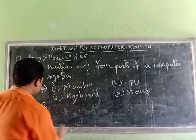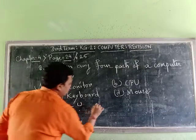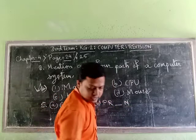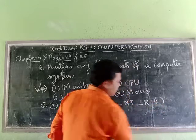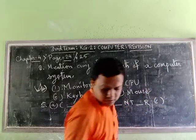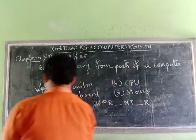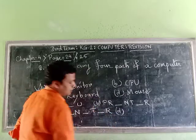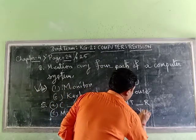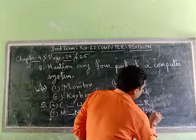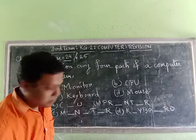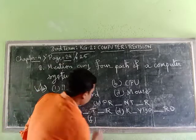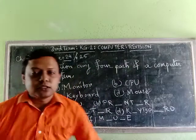The first one is C-P-U. Number B: P-R-I-N-T-E-R. Number C: M-O-N-I-T-O-R. Number D: K-E-Y-B-O-A-R-D. Number E: C-D. And number F: M-O-U-S-E. So these are the fill-ups.